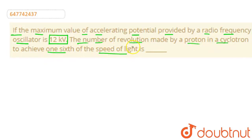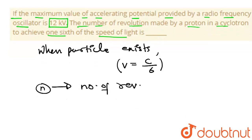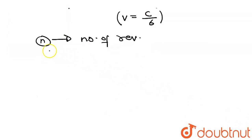We will consider when the particle exits. When the particle exits, we have V equal to speed of light over 6, or C/6. Let N be the number of revolutions.